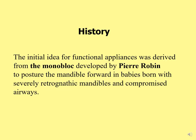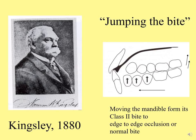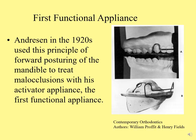The history goes back to the monoblock appliance developed by Pierre Robin around the 1920s, with the idea of pushing the mandible forward in babies born with severely retrognathic mandibles and compromised airways. Another pioneer, Kingsley, introduced the anterior inclined plane to bring the mandible forward and allow dental and skeletal changes. The first well-known functional appliance in dentistry was the activator, introduced by Andresen in the 1920s, using forward posturing of the mandible to treat malocclusion with a one-piece, bulky appliance.